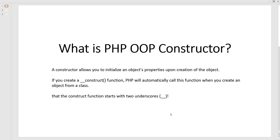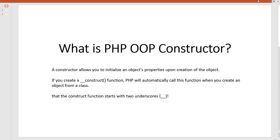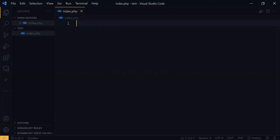If you create a constructor function, PHP will automatically call this function when you are creating an object from the class. When we have a constructor within the class and we create an object using that class, it will automatically trigger this constructor first, then do other things. The construct function starts with two underscores. I will explain these things using a PHP code example.